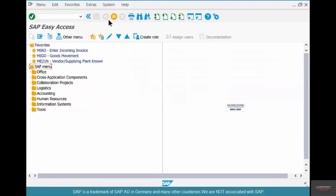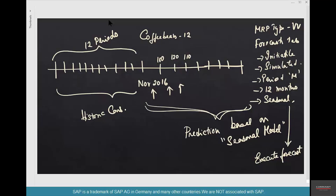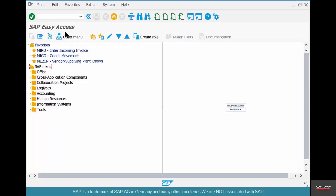Predicting consumption is one thing, and taking action on that is another. The material now has consumption values — both past and predictions into the future. SAP says that in December 2016, which is next month, it requires 120 pounds of coffee — but that's all it said during the forecast. It's up to the MRP controller or planner to ensure 120 pounds of coffee beans is available in December. To do that, you either produce or procure. Since we don't produce coffee beans, we procure them, creating a purchase requisition or purchase order. You don't have to do this manually — you can run MRP.